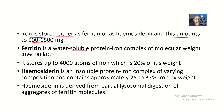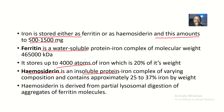Ferritin is a water-soluble protein-iron complex of molecular weight 465,000 kDa. It stores about 4,000 atoms of iron, which is about 20% of its weight. Hemosiderin, on the other hand, is an insoluble protein-iron complex of varying composition and contains approximately 25% to 37% iron by weight.